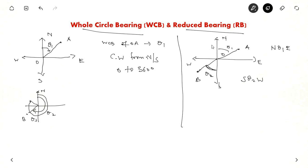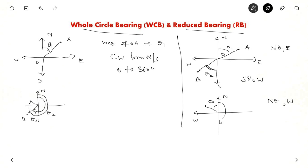These are different quadrants — a point can lie in any quadrant. Suppose this is the point you want to measure with angle theta 3. If you measure from south it falls in the next quadrant, so you measure from north. So this is north theta 3 west. In whole circle bearing it is measured all the way from north clockwise, whereas in reduced bearing it is the shorter angle. Whole circle bearing is also known as the azimuthal system, and reduced bearing is also known as the quadrantal system.